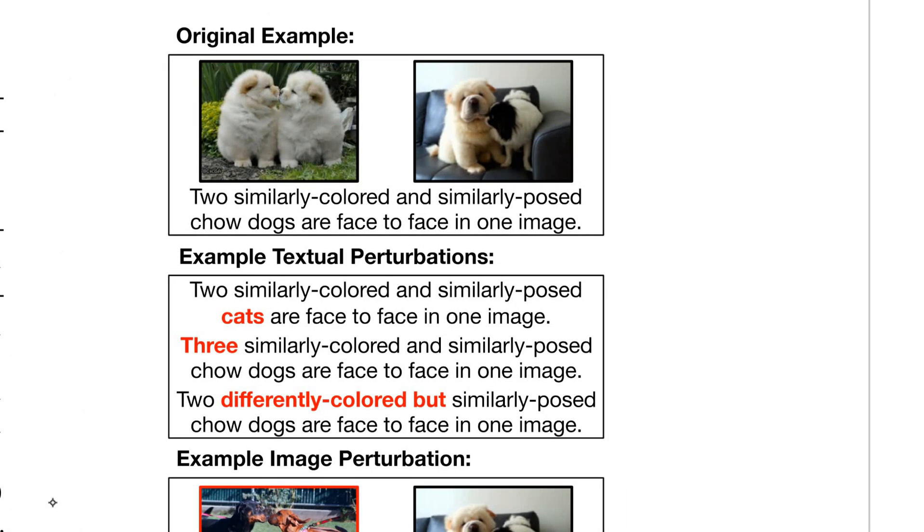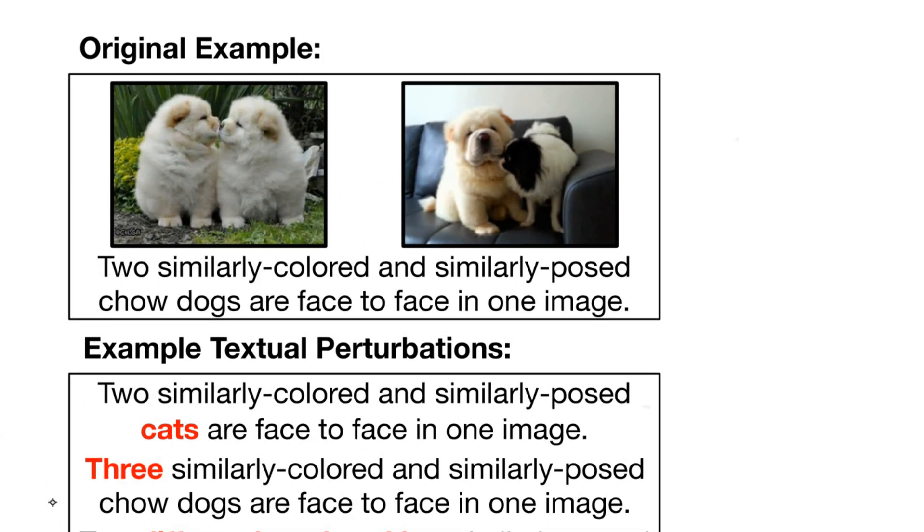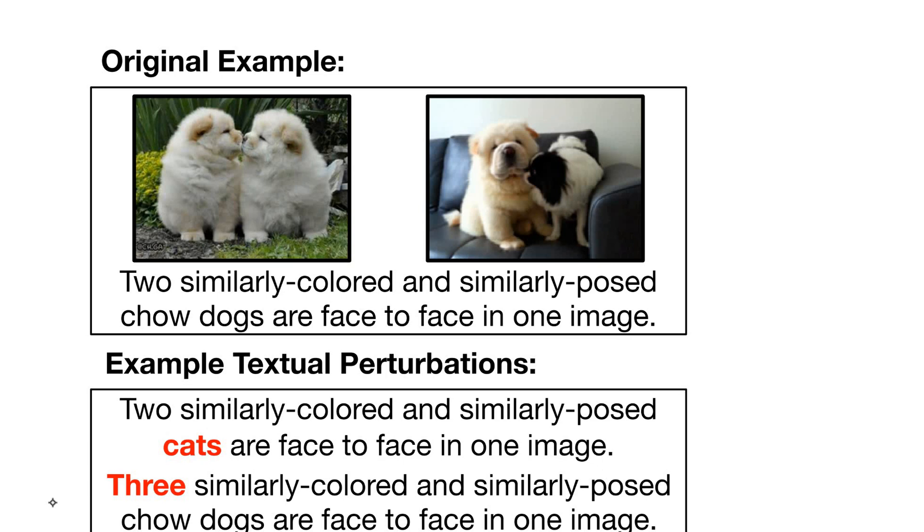So what is the problem, or let's jump into the solution. Here you see a visual question answering task. Visual question answering in this case you have two pictures right here, picture one, picture two and a sentence. Two similarly colored and similarly posed chow dogs are face to face in one image.